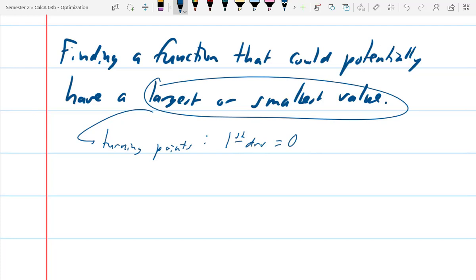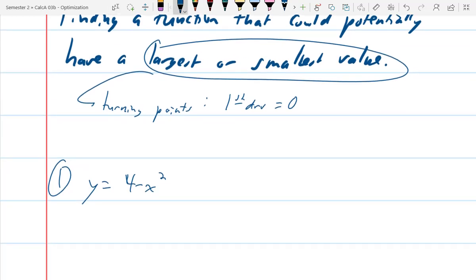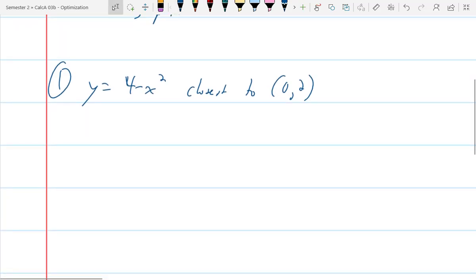Okay. So looking at number 1. Sorry, I'm trying to plug this in because this drains battery really quickly when I do this. Okay, looking at number 1. Number 1 asks, which points on the graph of y equals 4 minus x squared are closest to the point (0, 2)?